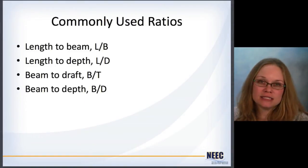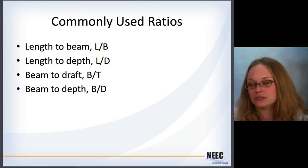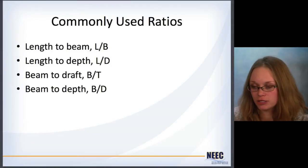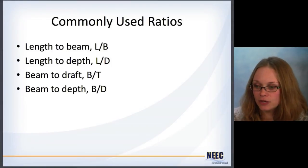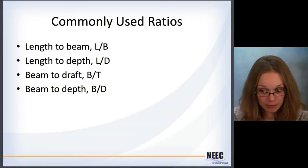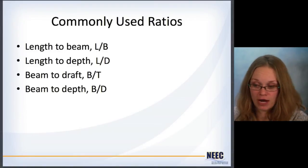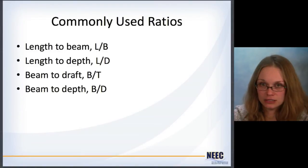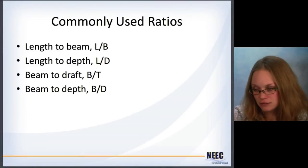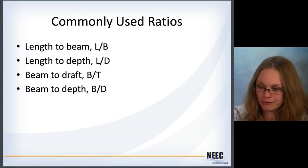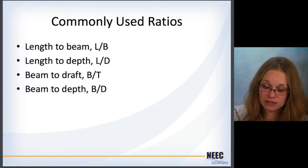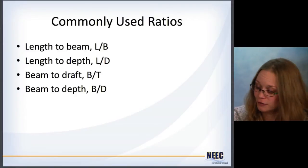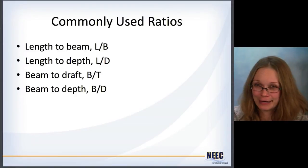Now we've got some of these numbers, and we can start to use them to compare ships. Some commonly used ratios are length to beam (L/B), length to depth (L/D), beam to draft (B/T), and beam to depth (B/D). Just know these and remember what they are — they're not very inventively named.